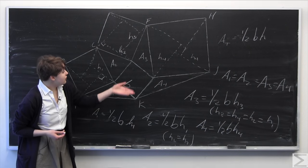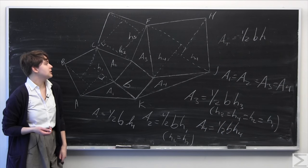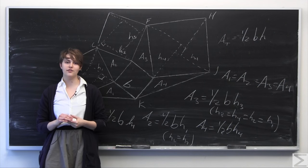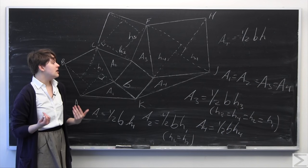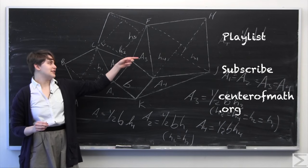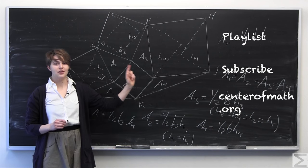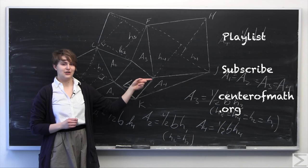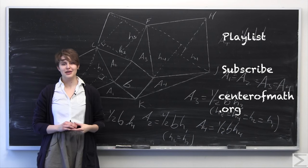That'll be all for this week's problem of the week. What we've done is constructed a geometric proof — a geometric argument — that the area of all four inscribed triangles is equal. For more problems of the week, you can visit our playlist here, subscribe to our YouTube channel by clicking this link, and visit us at centerofmath.org. Thank you for watching.